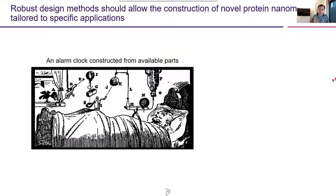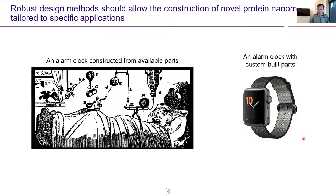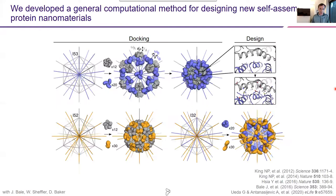This is how human beings traditionally develop new technologies. If you limit yourself to only using available parts — things around your house — you end up with ridiculous, non-robust contraptions. But this isn't what we do as humans. We build the parts for the things that we need, and when we do that, we end up with technologies that are simple, robust, and controllable. And this is what we're trying to do with protein design.